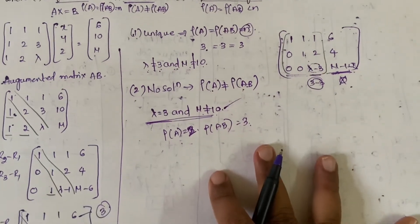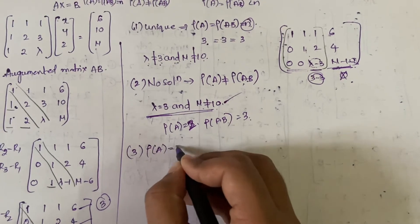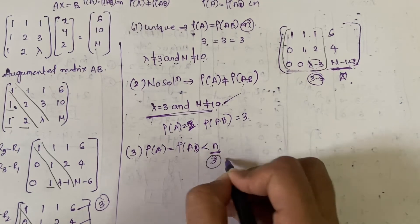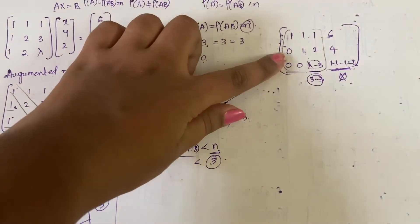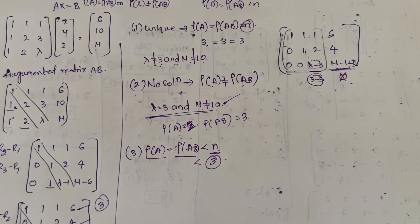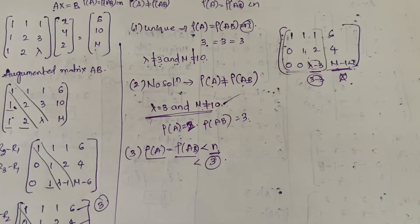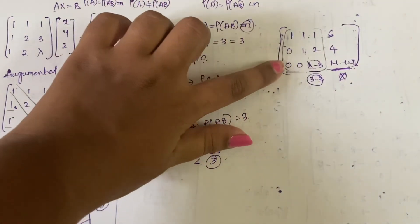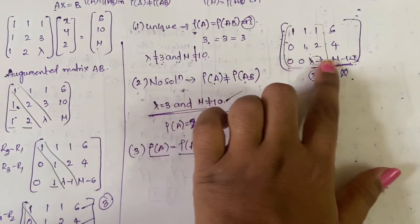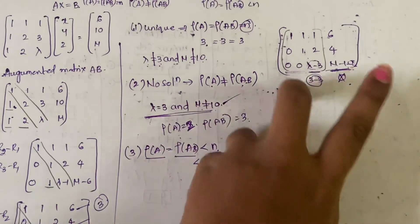For infinite number of solutions, rank(A) = rank([A|b]) < n = 3, so the rank must be 2 (rank 1 is not possible since the first two rows have fixed non-zero values that cannot be changed). For rank to be 2, the third row must be a complete zero row in both A and [A|b], so both λ−3 = 0 and μ−10 = 0 must hold.